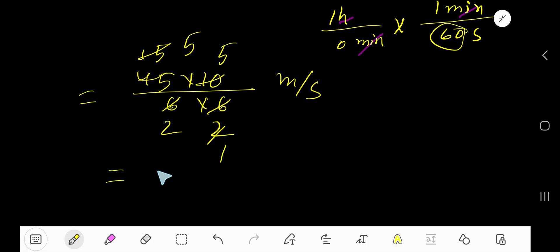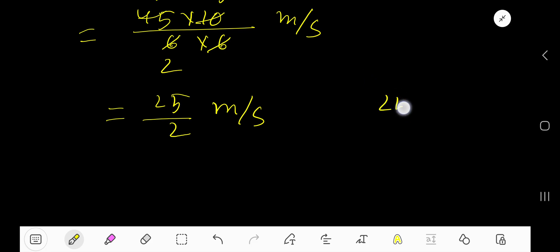Basically, you are getting 5 times 5, which is 25 divided by 2 meter per second. Now divide 25 by 2.